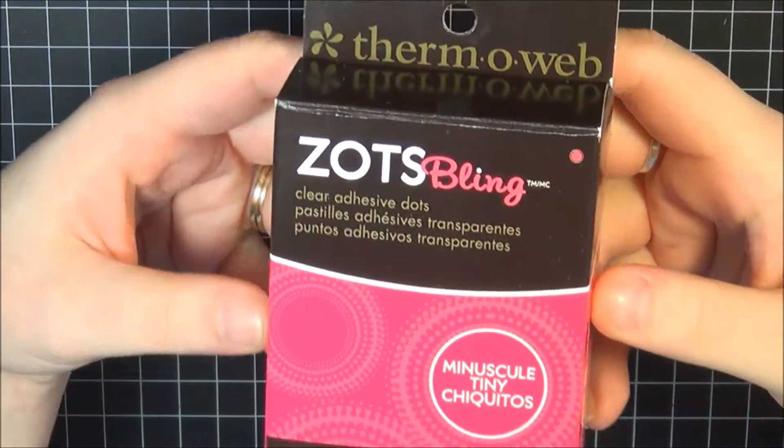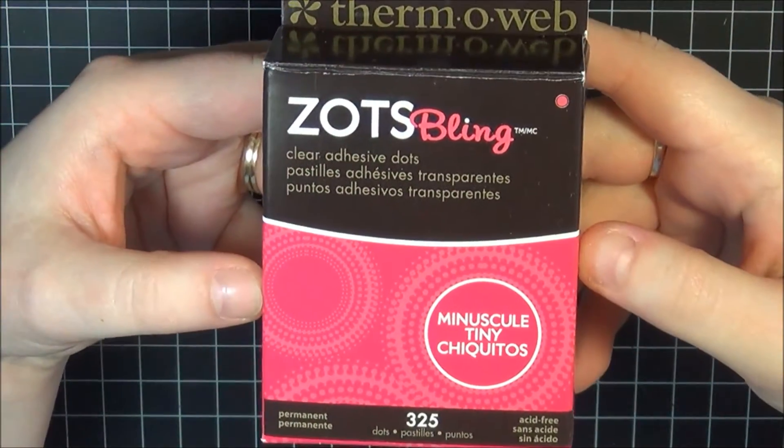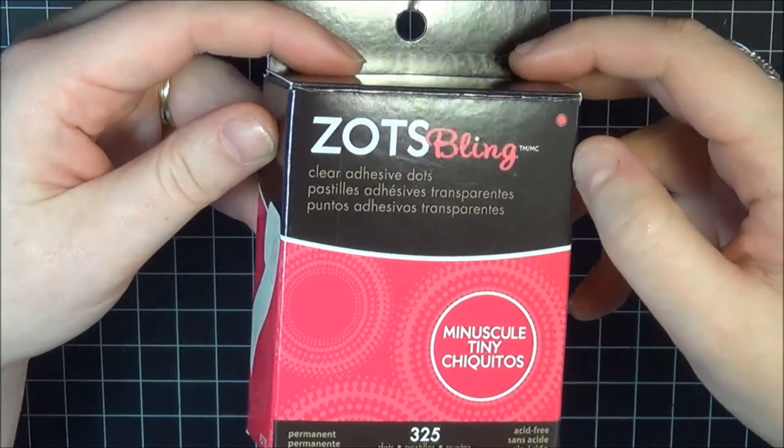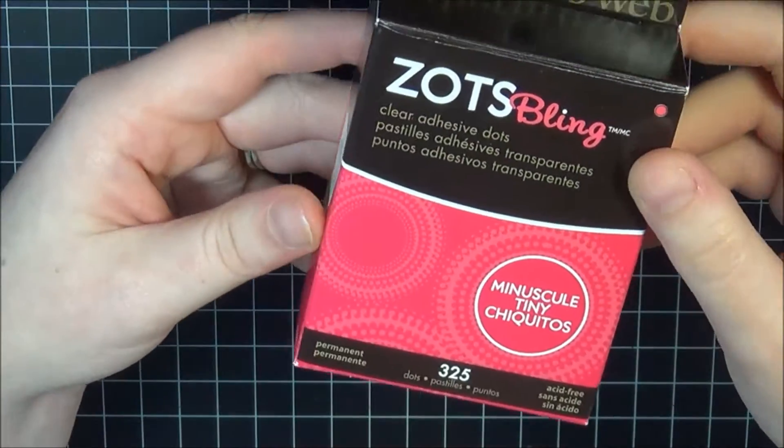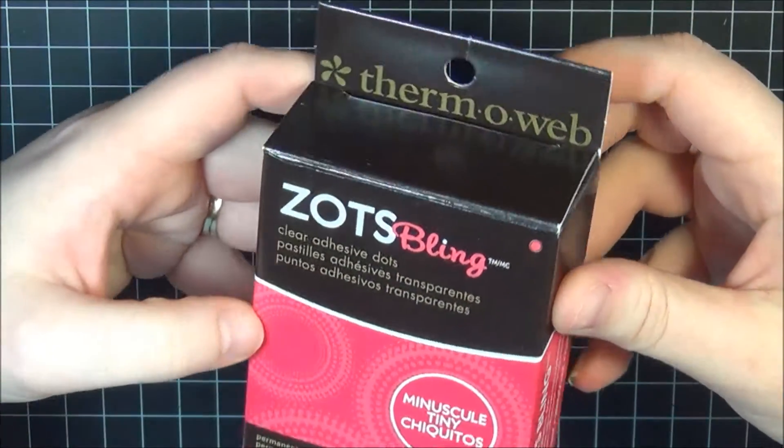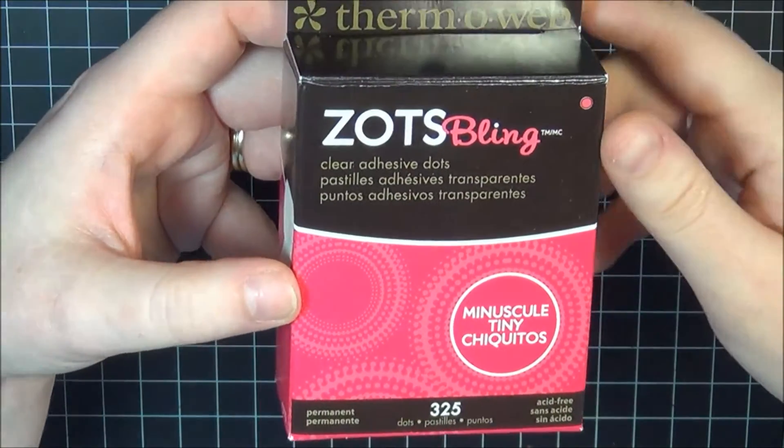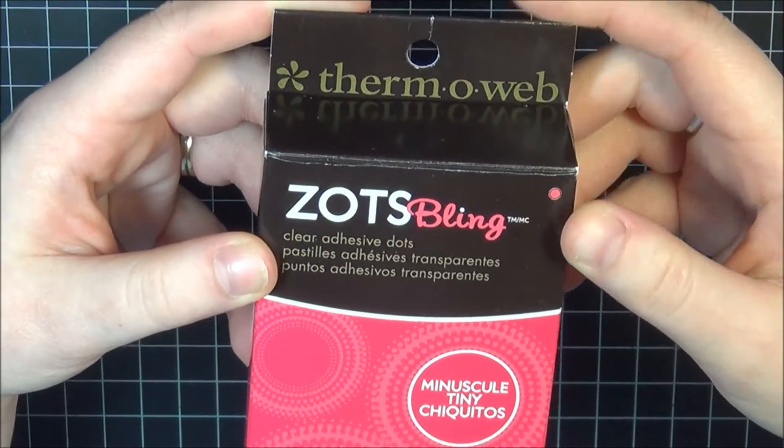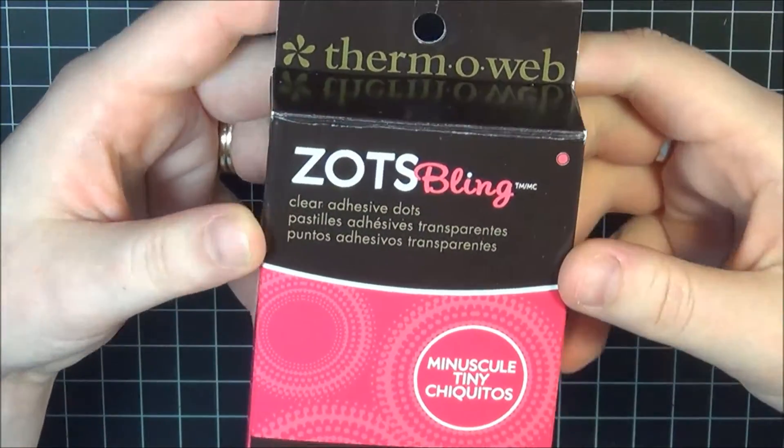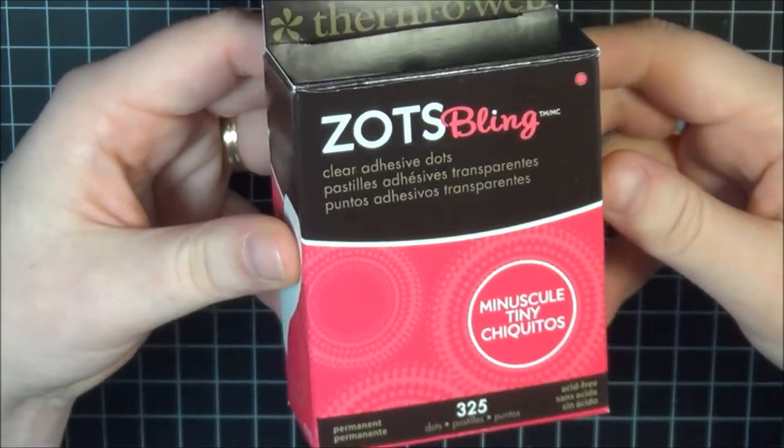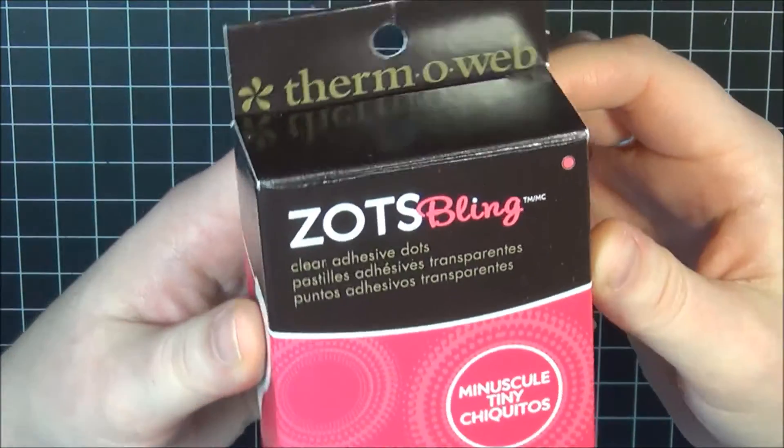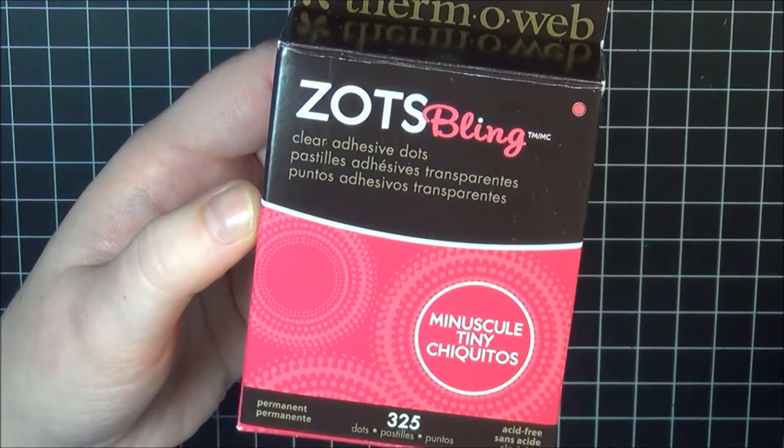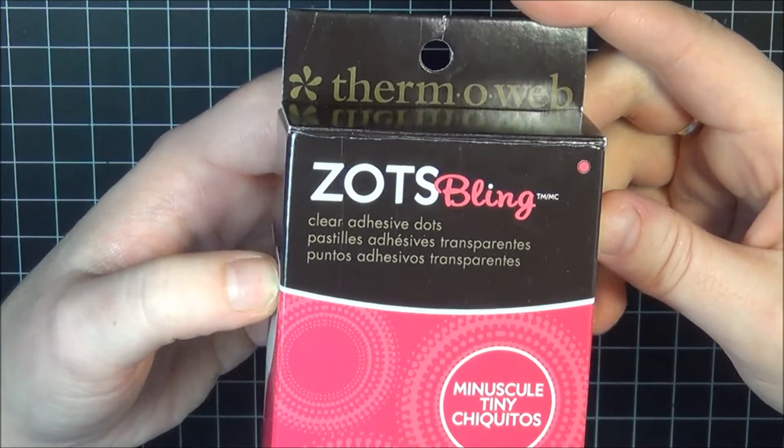The first thing that I have are these Thermoweb Zotz Bling Adhesive, and I found these out by watching Nicole McWarrick's videos. They are awesome. If you haven't, go check her channel out. If I remember, I will link it below. She is an awesome card maker, scrapbooker, and she's just a great crafter all around.